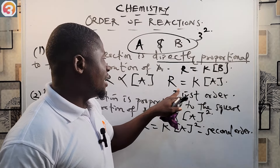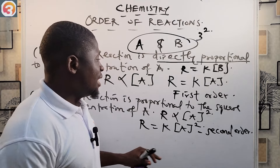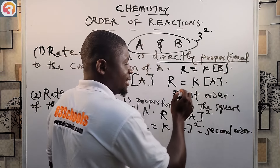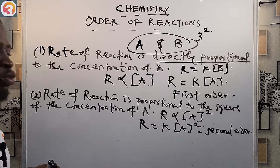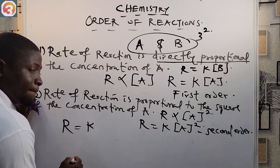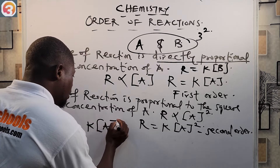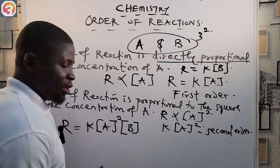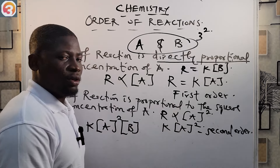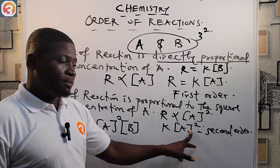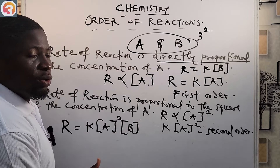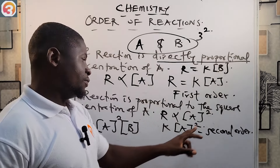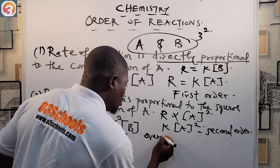A reaction can be zero order, first order, second order, or third order, corresponding to calculated values of 0, 1, 2, and 3 respectively. Now I want to do one final experiment to completely drive the point home. From what we have found, R = k[B] for one result and R = k[A]² for another.